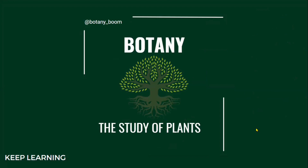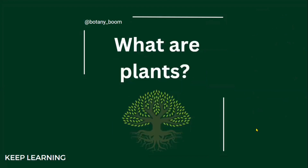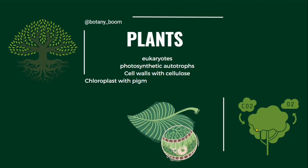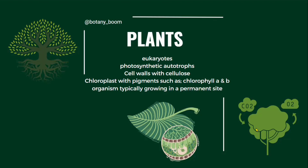Now the question arises: what are plants? Plants are eukaryotes, meaning they have a true nucleus and membrane-bounded organelles. They are photosynthetic autotrophs — they can prepare their own food through photosynthesis — have cell walls with cellulose, and have chloroplasts with pigments such as chlorophyll A and B.